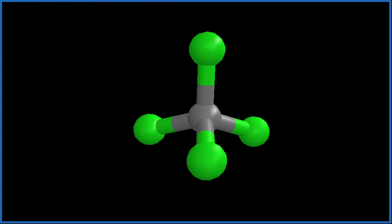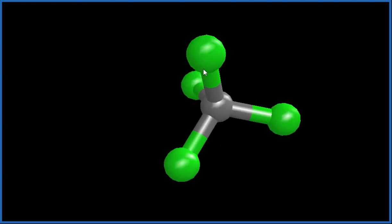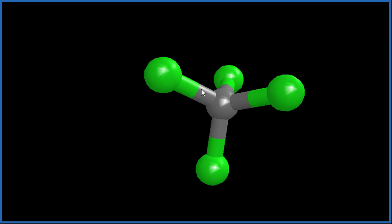We can see the central carbon, that gray, and then the bromines, those would be the green. You can see they're all spread out. They're as far away from each other as they possibly can be, while still having this bond here to the central carbon.